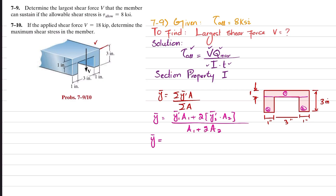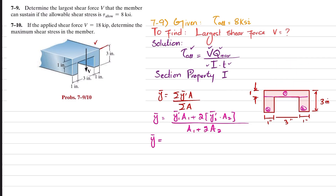Area A1 is 1 inch × 5 inches (the top flange). The centroid y1' of area 1 from the top is half of 1 inch, which equals 0.5 inch. So the numerator starts with 0.5 × (1×5).